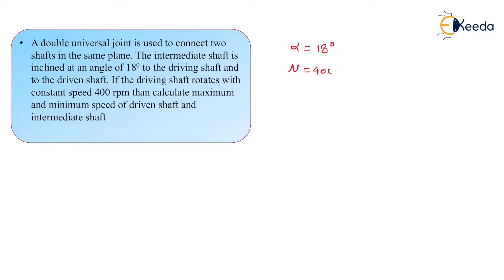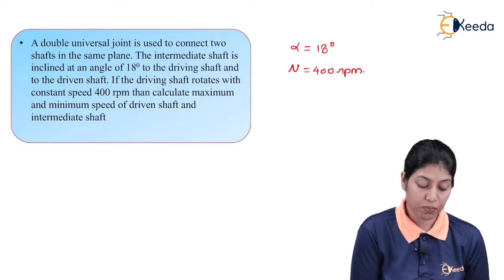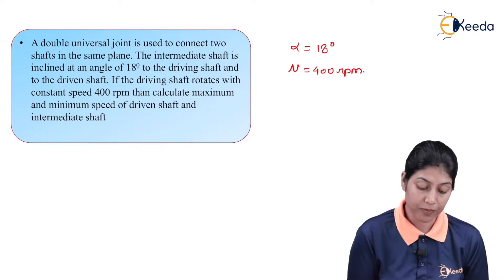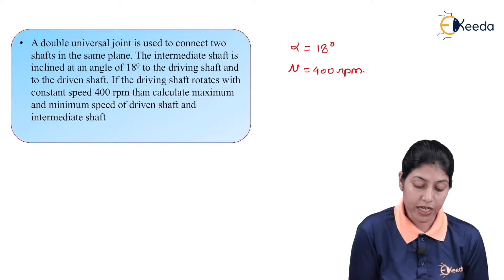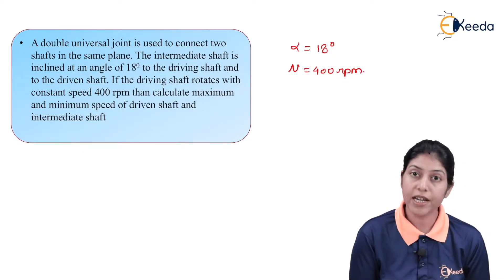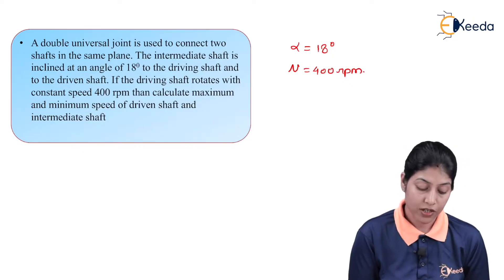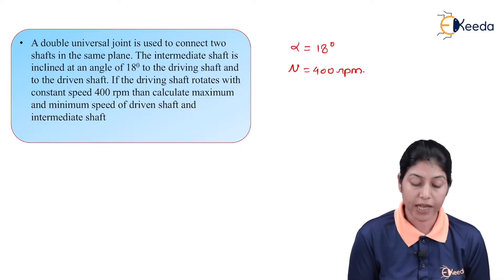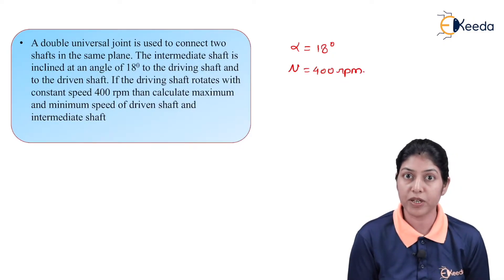The speed of the driving shaft N is given as 400 RPM. For this condition, we have to calculate the maximum and minimum speed of the driven shaft as well as the intermediate shaft. Let's start the solution to find out those values.